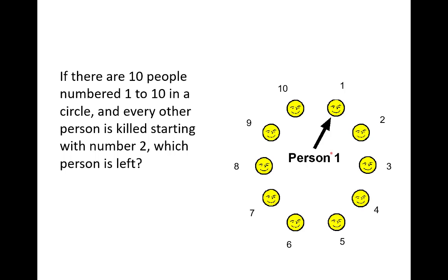We'll demonstrate with the picture here. Person number one is listed, and then two and three and so on, and person number two is the first to go. And then after that, we skip three, and four is next. And then from four we skip five, and six is killed. Six and then eight, and then from eight, ten goes.